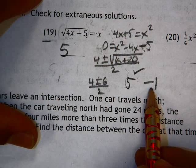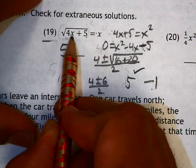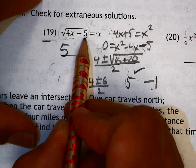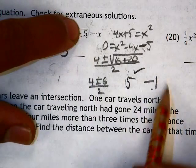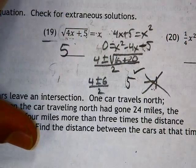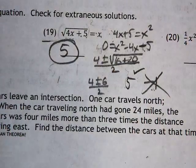We try negative 1. 4 times negative 1 is negative 4. Plus 5 is 1. The square root of 1 is 1, which is not equal to negative 1. So this one's an extraneous solution, so this is my only answer.